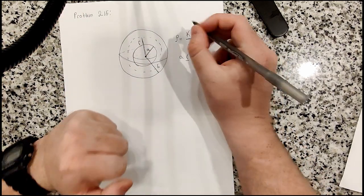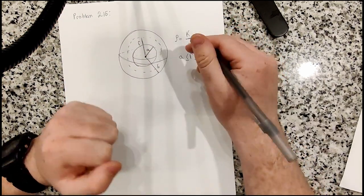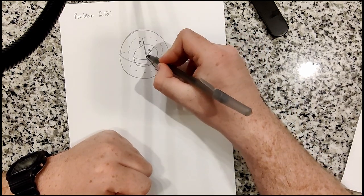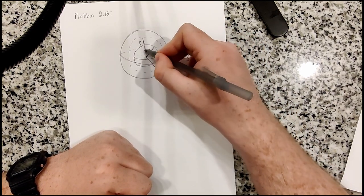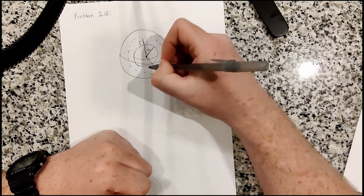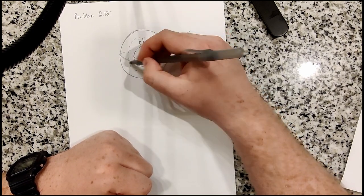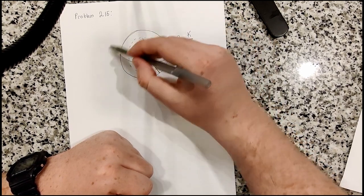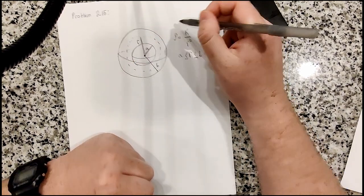And we're asked to find the electric field in the three potential regions we have, where r less than a, so within the inner sphere, the electric field between the two spheres, and then the electric field outside of the entire configuration in free space.